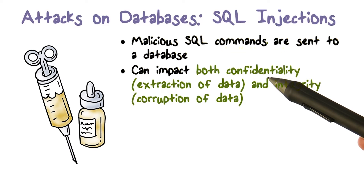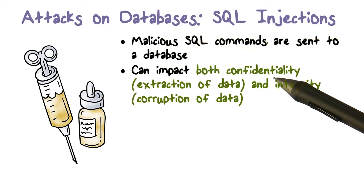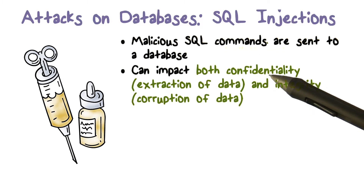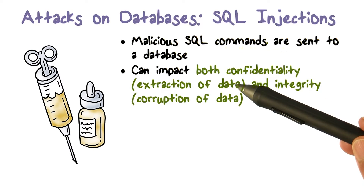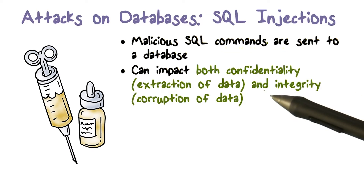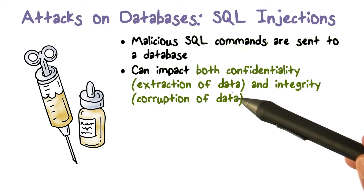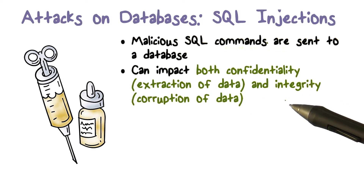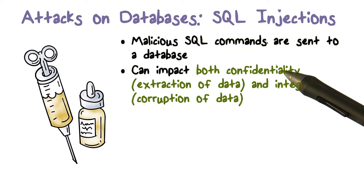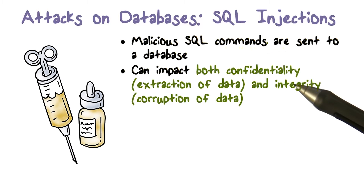These injection attacks, when successful, can disclose large amounts of data — we talked about disclosures of customer data earlier. That impacts confidentiality of the database, extracting data that goes to somebody who shouldn't have access to it. Injection attacks can also corrupt or delete data, such as tuples in a table, which impacts integrity. So injection attacks can corrupt, which is integrity, or disclose, which is confidentiality — both bad outcomes are possible.